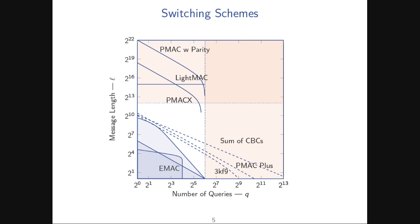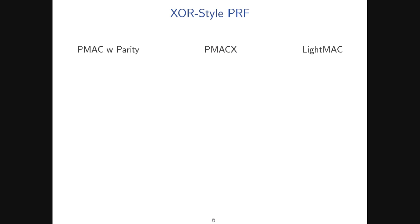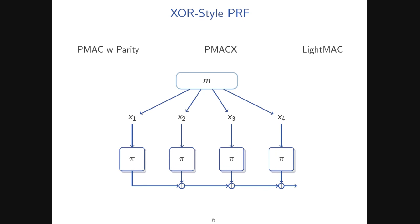If you look at these three constructions alleviating the message-length restriction, they are all a similar style — what I'm calling XOR-style PRFs. The way they work is: from the message they compute a whole bunch of block cipher or permutation inputs labeled X1, X2, X3, X4. It's not as simple as EMAC where you just chop the message into blocks — you chop into blocks, reuse some blocks, and XOR masks into them. Then they compute the permutation outputs and XOR all of those together, with an output transform not shown here.